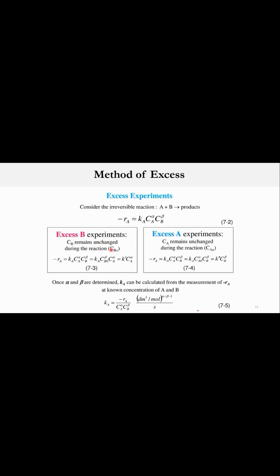In the excess B experiment, C_B remains unchanged during the course of the reaction, so C_B equals C_B0, and K_A times C_B0 becomes K prime, giving K prime times C_A raised to power alpha. From this we can determine the value of alpha and K prime.